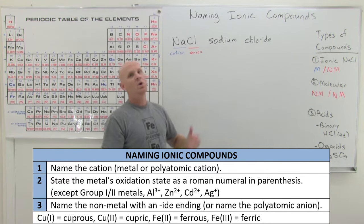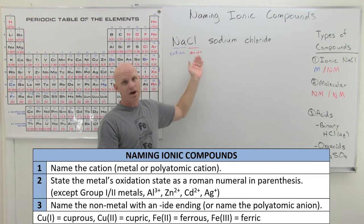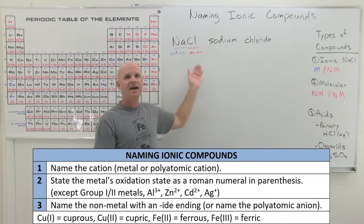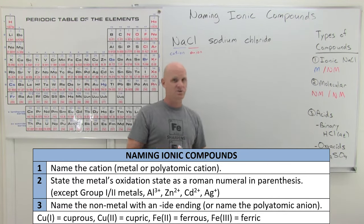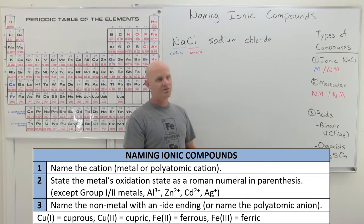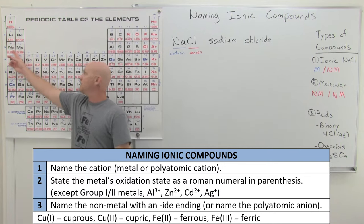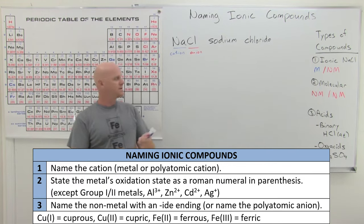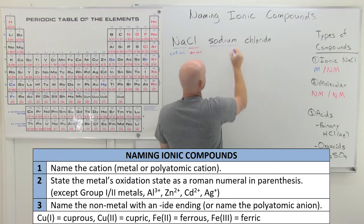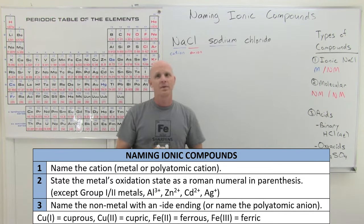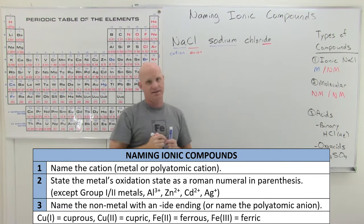Saying cation and anion also accounts for the fact that we can have polyatomic cations or polyatomic anions involved as well. In the case of sodium chloride, our cation is sodium — Na is the chemical symbol — so we name the cation first. The name is not a proper noun, so don't capitalize it unless it starts a sentence.